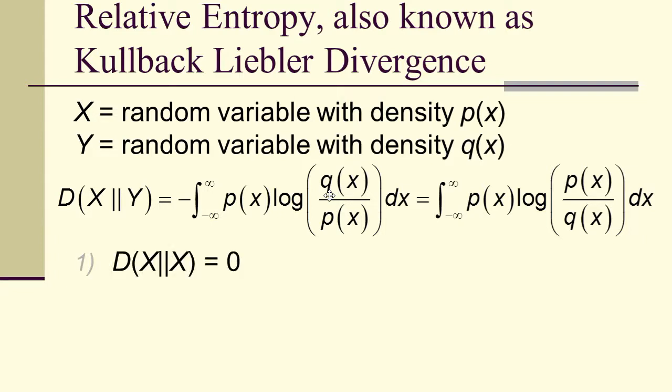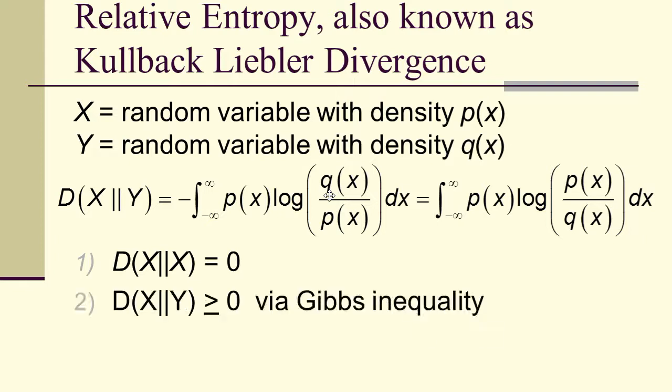So this is the relative entropy, which I can write without the negative by simply flipping the ratio inside the logarithm. It has the property that if I take the divergence of a random variable x with itself, I get zero, because I would have the log of p over p.